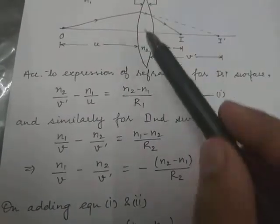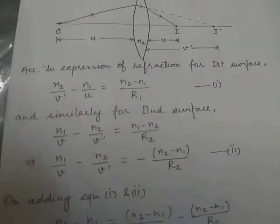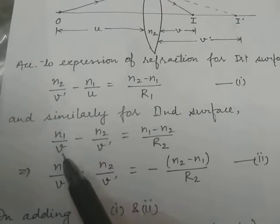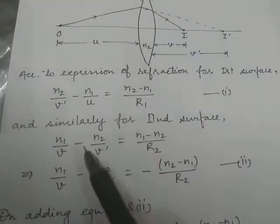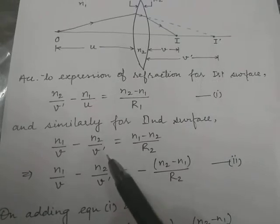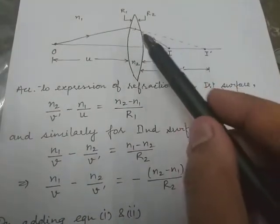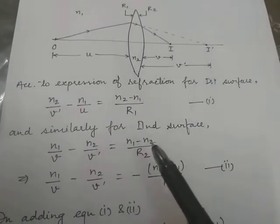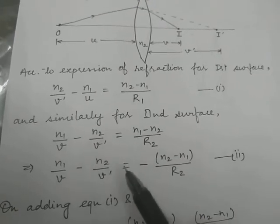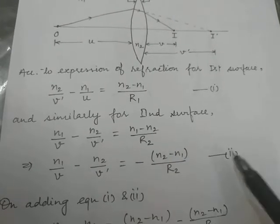For the second surface, light is traveling from N2 to N1 — from the lens to air — so the formula is slightly different. It becomes N1/V minus N2/V' equals (N1 minus N2)/R2, because light is traveling from N2 to N1. Here I' is considered as the object, so N2/V' appears. Taking minus one as common, this gives N1/V minus N2/V' equals minus(N2 minus N1)/R2. Let this be equation number two.